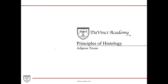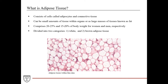In this lecture, we're going to talk about a special type of connective tissue called adipose tissue. What is adipose tissue? It consists of cells called adipocytes and the surrounding connective tissue. Adipose tissue can be found in small amounts within organs, serving as padding or insulation, or as large masses of tissue known as fat.